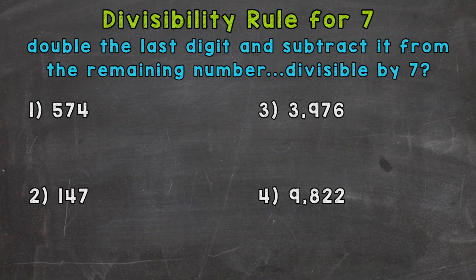Now, when it comes to divisibility, remember, we're checking to see if we can divide without getting a remainder. So the given numbers work out exactly. So in this case, we're going to take a look at four numbers here and see if they are divisible by 7.